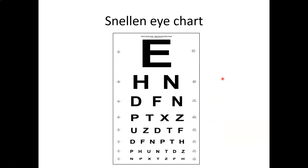Eye doctors use the Snellen eye chart to assess vision — you read the smallest line you can from 20 feet away. You should visit an eye doctor annually, not just for vision correction but also to check for developing glaucoma, cataracts, floaters, and other conditions. The chart also tells the doctor what kind of corrective lens you would need.